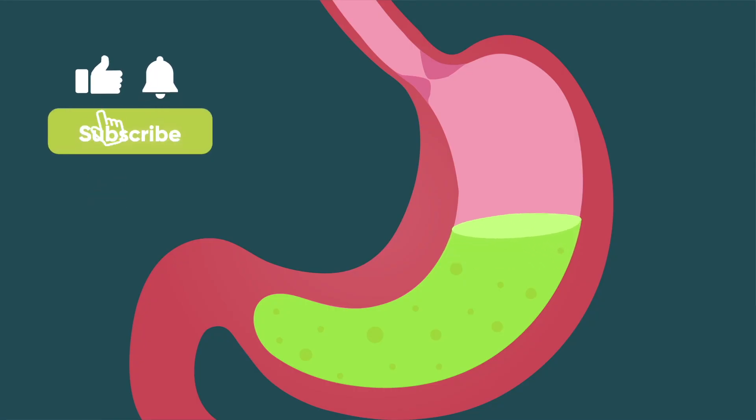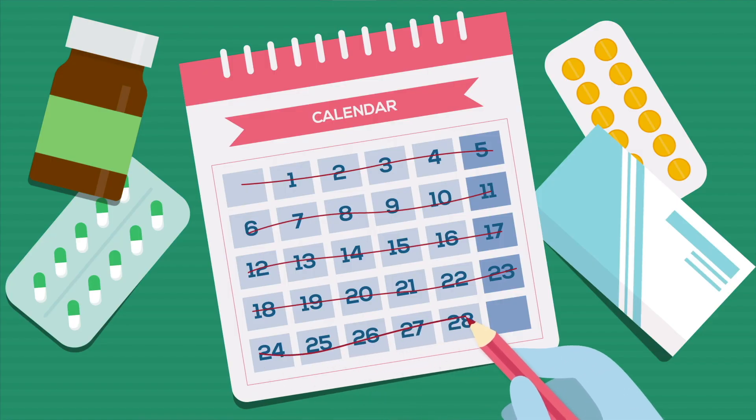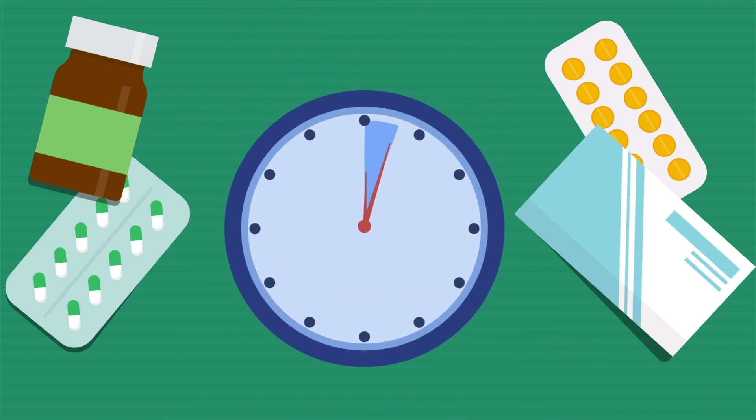If symptoms of GERD are not managed by these measures, we use medicines to control the amount of acid production. Such medicines, called proton pump inhibitors or H2 blockers, are used for two to four week periods. To get the best results, use these medicines at least 30 minutes before meals.